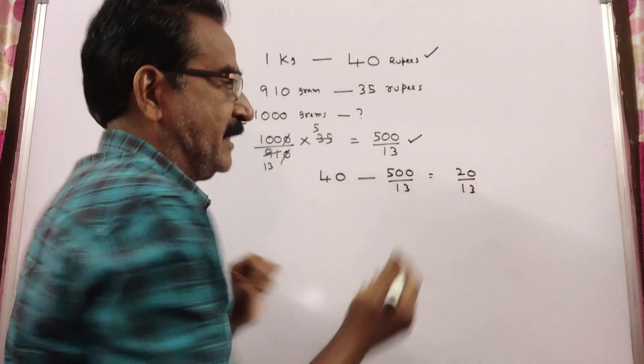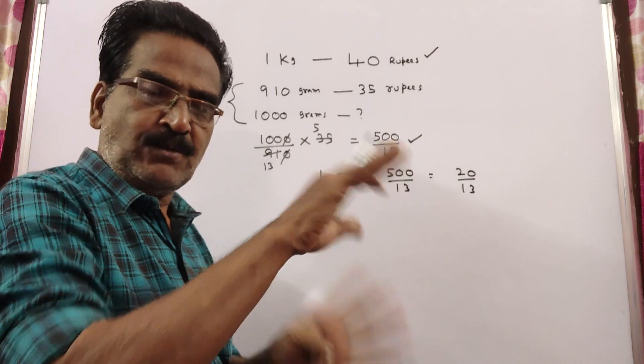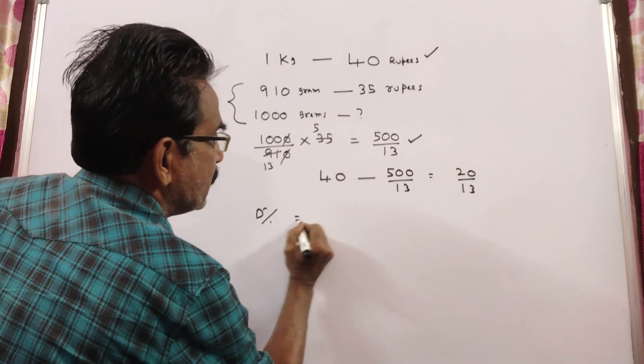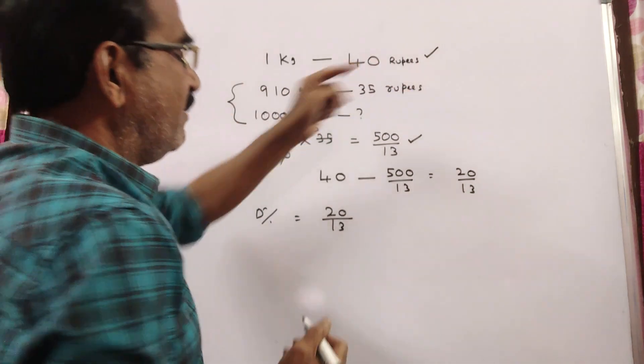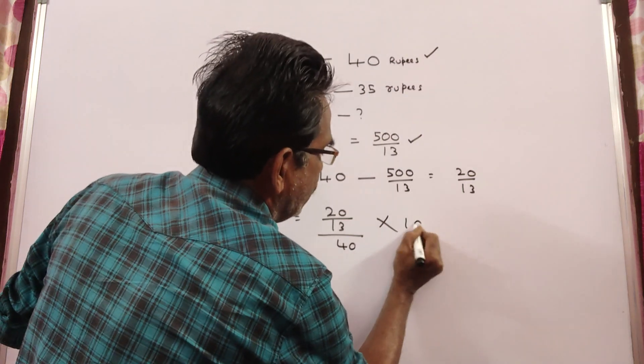We want the decrease percent. Decrease percent is equal to decrease by original value into 100.